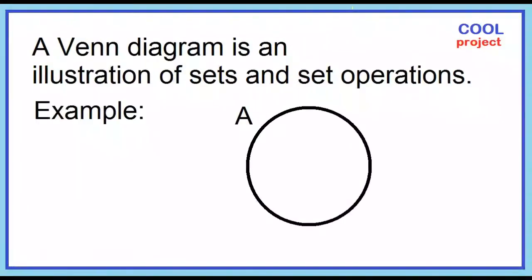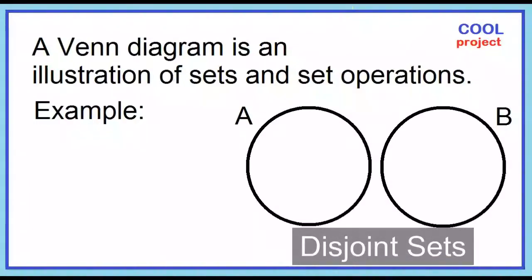A circle represents a set. This is set A and this is set B. Sets A and B are disjoint sets. Sets A and B are said to be disjoint if they have no element in common.